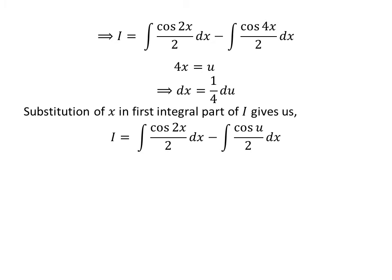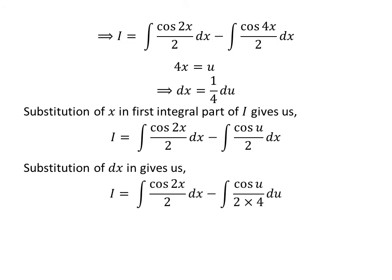Taking 4 to the right-hand side gives us differential of x is equal to 1 upon 4 times differential of u. Substituting 4x by u in the integral of cosine of 4x upon 2 with respect to x, we get I equal to the integral of cosine of 2x upon 2 minus the integral of cosine of u upon 2. Replacing differential of x by 1 upon 4 times differential of u, we get I equal to the integral of cosine of 2x upon 2 with respect to x minus the integral of cosine of u upon 2 times 4 with respect to u. As 2 times 4 is 8 and the integral of cosine of u is sine of u, so I equals the integral of cosine of 2x upon 2 with respect to x, minus sine of u upon 8.